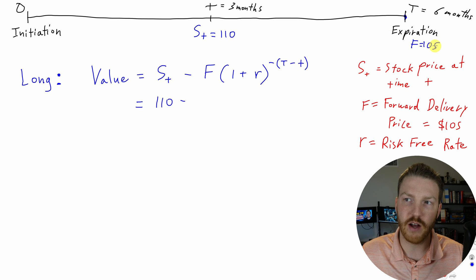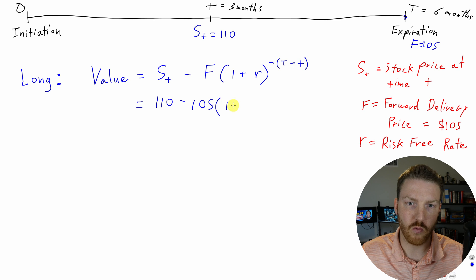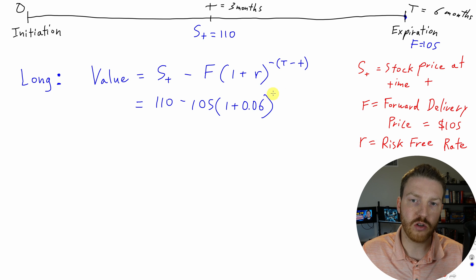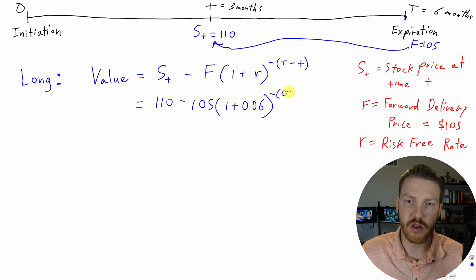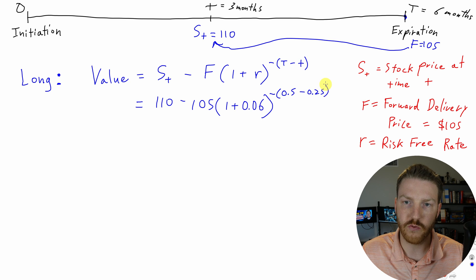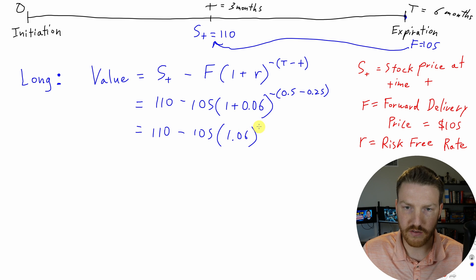To find out how much $105 is worth three months from now, we use the risk-free rate. We take F of $105 and discount it back by multiplying by (1 + r) — the risk-free rate, which we'll set to 6% — raised to the exponent of negative (T minus t). Big T is six months, which is 0.5 years, and little t is three months, which is 0.25 years, giving us an exponent of negative 0.25. Simplifying, we get 110 minus 105 times 1.06 to the negative 0.25.